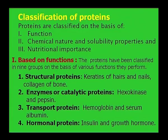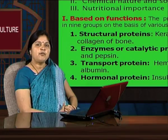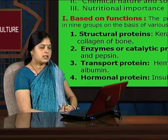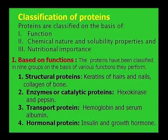Another class of protein is the transport protein. The example of transport protein is hemoglobin and serum albumin. Hemoglobin is the pigment protein involved in the transport of oxygen from one cell to another. Proteins also have a hormonal function. The example of hormonal protein is insulin and growth hormone.